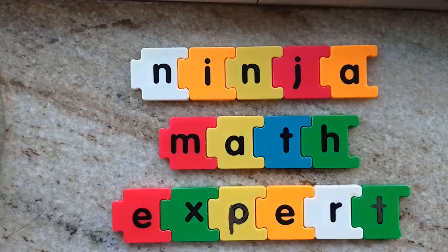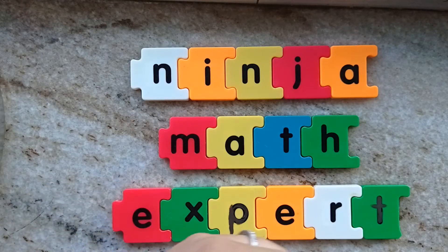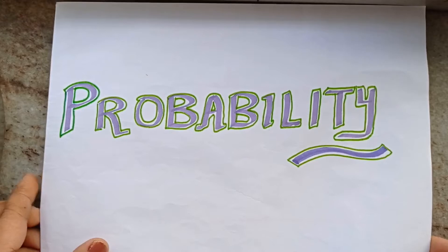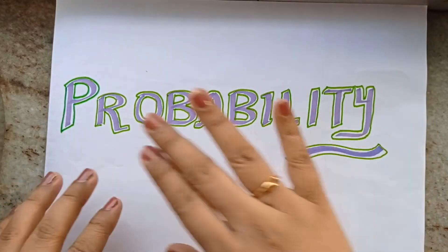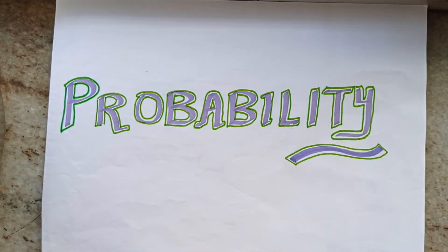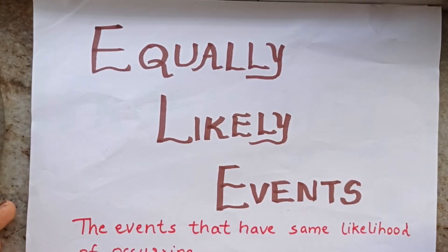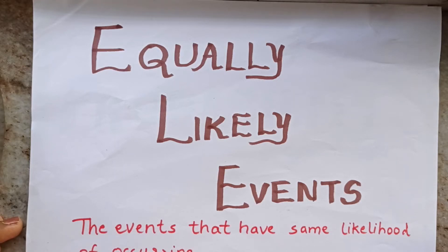Welcome to Ninja Math Expert. Today we are going to continue our discussion about probability. In probability, we will learn about equally likely events. Equally likely events are events that have the same likelihood of occurring — meaning they have the same chance of happening.